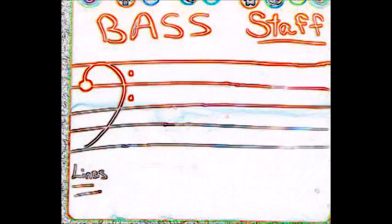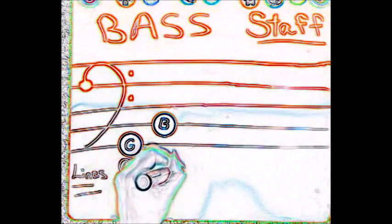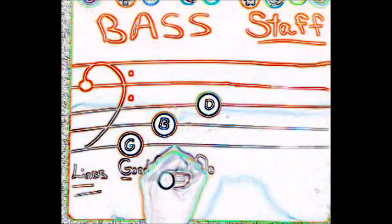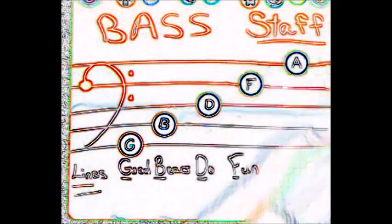Let's start by naming the lines and creating a fun phrase. Line 1, G, good. Line 2, B, bears. Line 3, D, do. Line 4, F, fun. Line 5, A, activity.